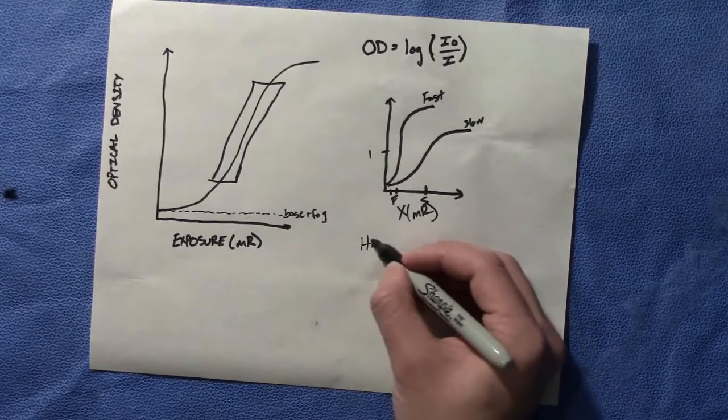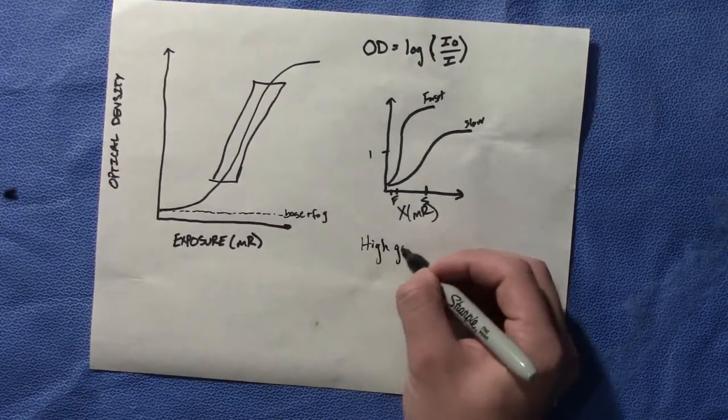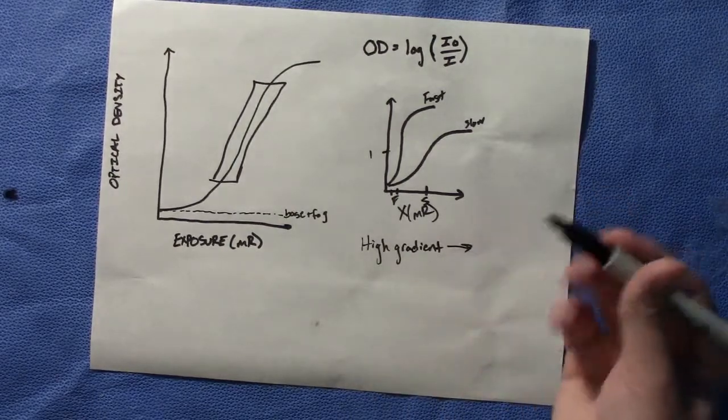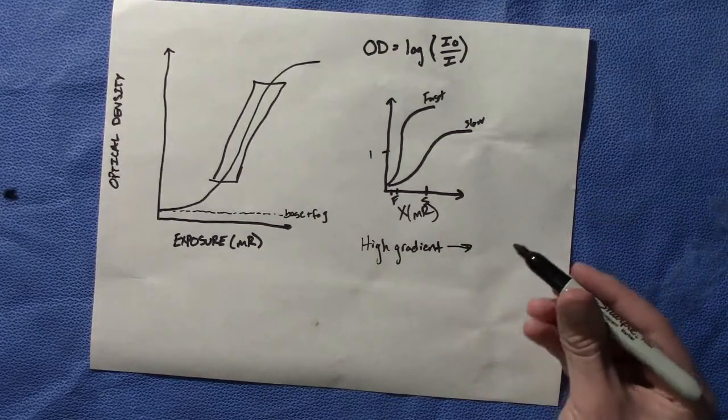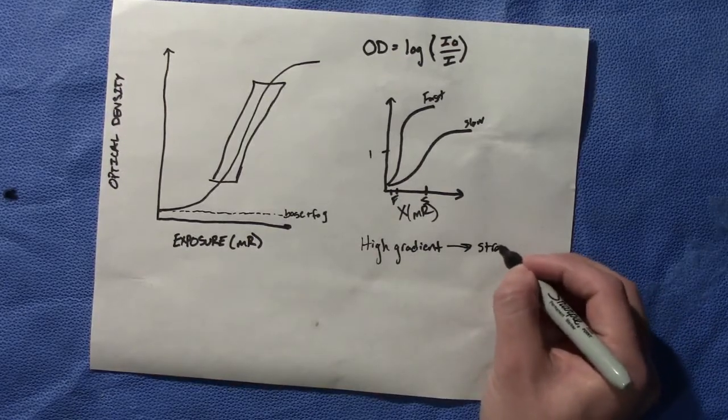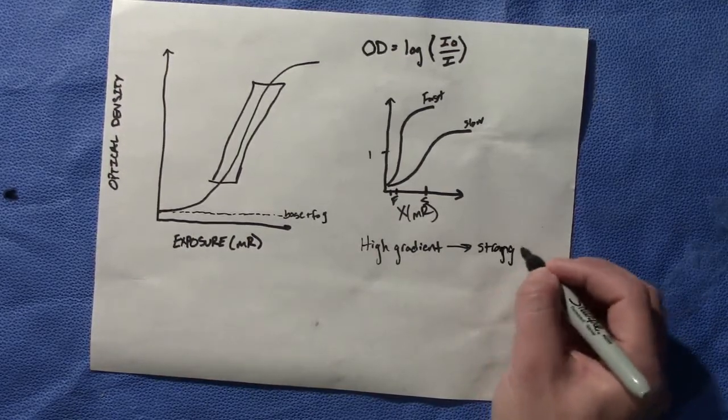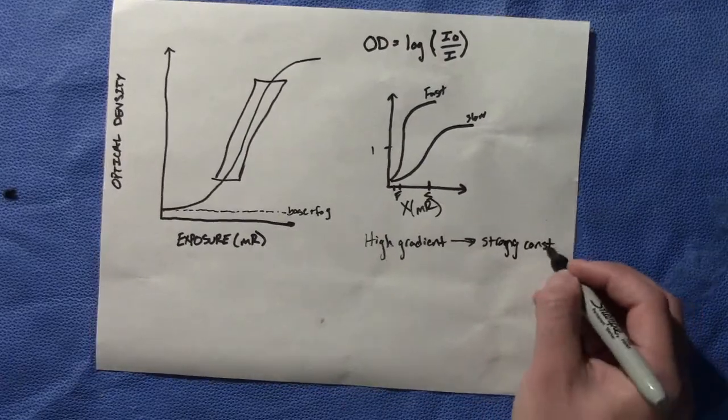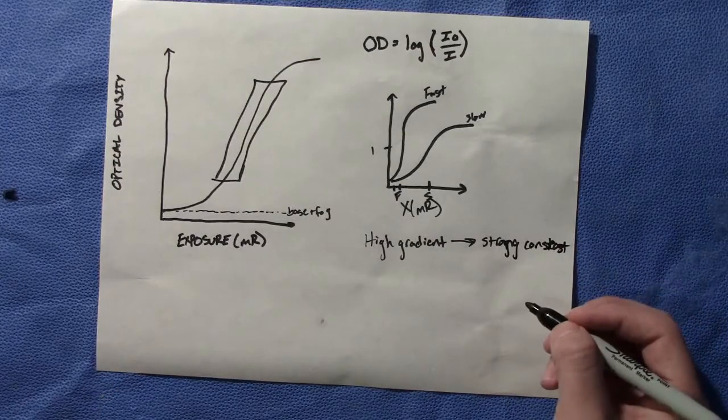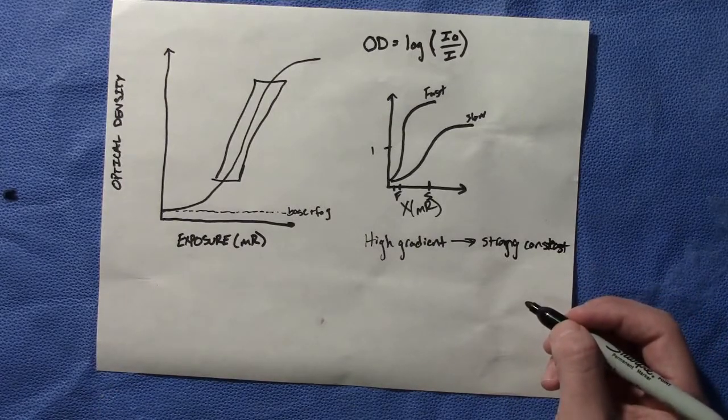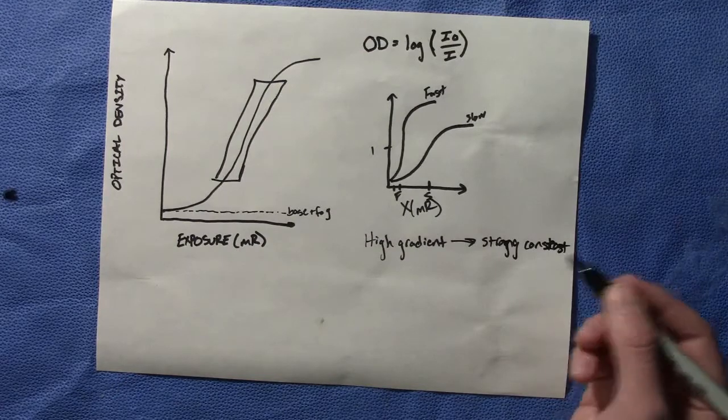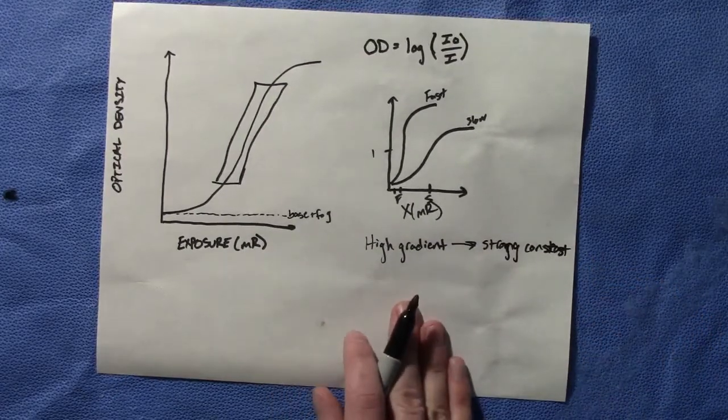If we have a high gradient, something important to remember, we have strong contrast which we want in our films. Smaller changes in exposure lead to a large change in optical density for a high gradient film.